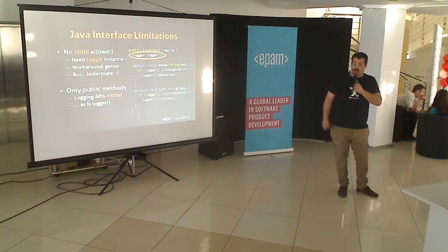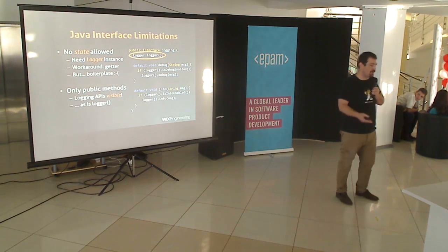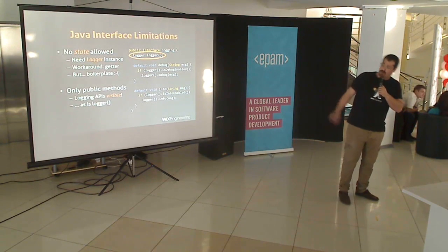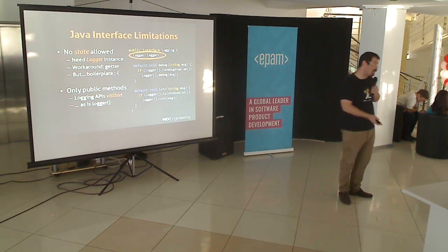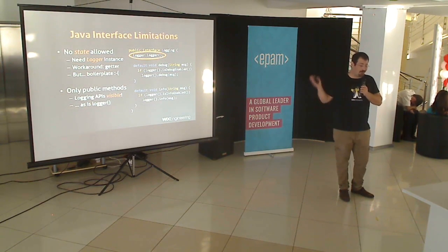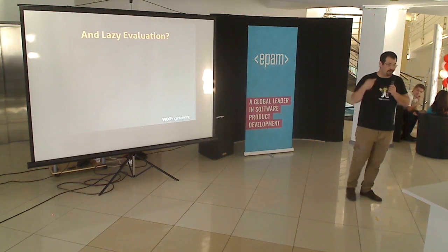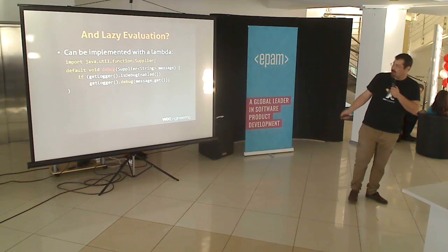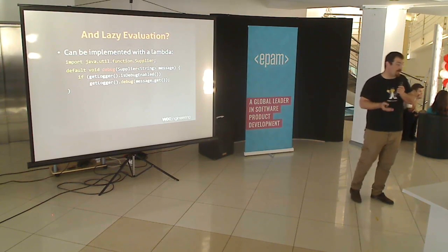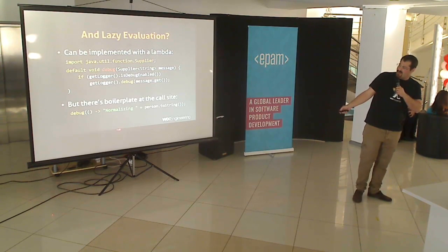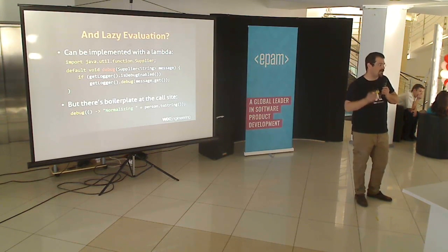The other problem is that Java interfaces only provide public interfaces. You cannot have private members, protected members, you cannot have state. So all these debug, warn, info helper functions are visible outside of your class — they're visible to the users of that class, which is obviously a bad idea. In practice, you cannot have your logger trait in Java 8, no matter how much you want. One thing that Java 8 does do is give you some facilities for lazy evaluation — with lambdas you can use the Supplier functional interface to mimic lazy evaluation. The syntax on the usage side is a bit annoying: you have to have the open and close parentheses and the arrow, but it's not too bad.